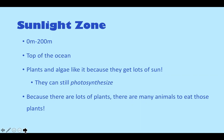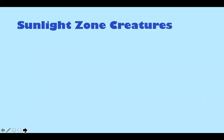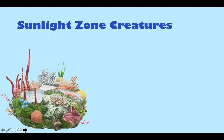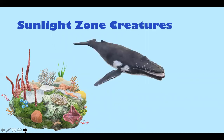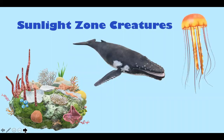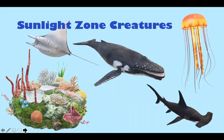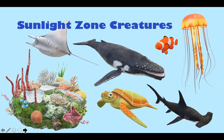Some examples of sunlight zone creatures that we see include plants of all kinds, whales — when we see whales at Blue Ocean Society, we see them in the sunlight zone, and most animals we see there are from the sunlight zone — jellyfish, sharks, rays, fish of all kinds, and sea turtles. And the list does not stop there; it goes on and on.